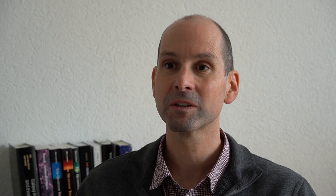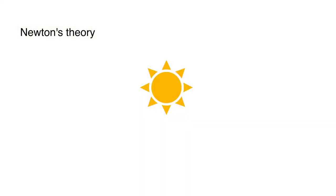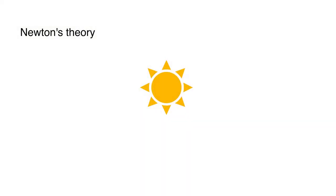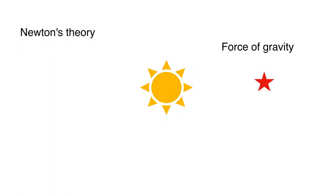Einstein's theory gives two times the result of Newton's theory. To understand why, we need to look more closely at how Einstein's and Newton's theories of gravity work. In Newton's theory of gravity, a massive object like the sun creates a force — the force of gravity — which attracts all other objects around it. This force also acts on particles moving at the speed of light. So when the light from a distant star passes close to the sun, it is attracted by the sun, which changes its trajectory.